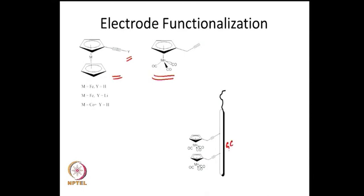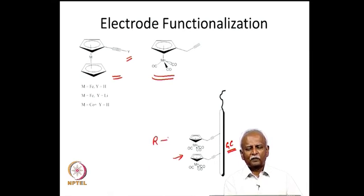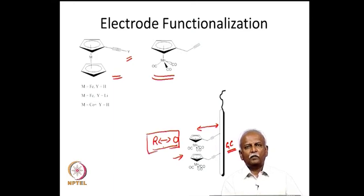The glassy carbon electrode is generally an inert electrode where electron transfers can be carried out, but the transfer itself has a high barrier. When you attach an organometallic moiety, the reduced and oxidized species transfer electrons to the organometallic species and so transfer the electron to the glassy carbon electrode. This transfer turns out to be very facile, and the electrochemical reaction is facilitated because of the functionalized electrode.